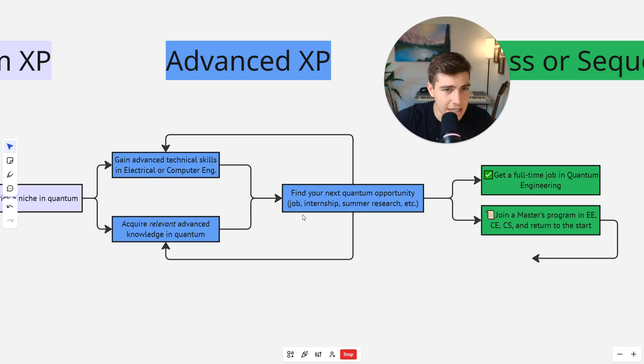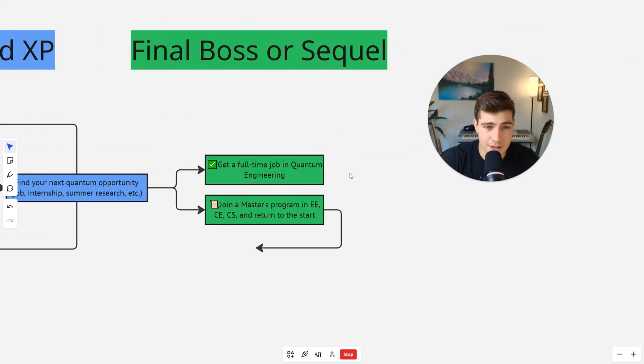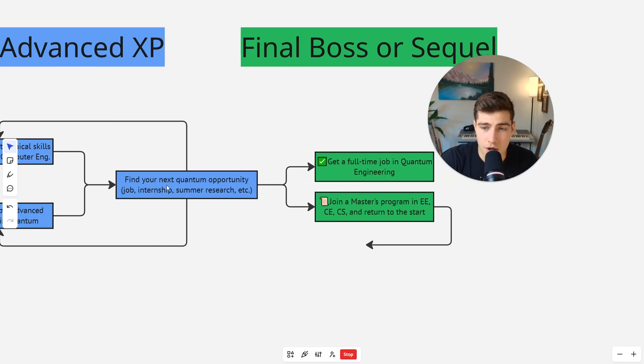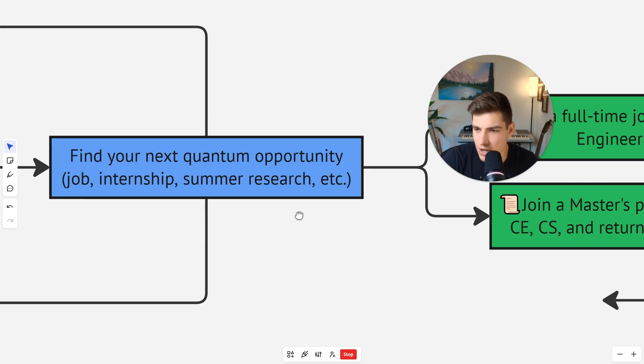Keep getting XP until you are experienced enough to take on the final boss. Okay. And the final boss is basically getting a full-time job, applying, interviewing, that kind of stuff. And if you are smart, you'll probably try to get a return offer at one of your internships or maybe a full-time position at a research lab that you did summer research at or something like that.